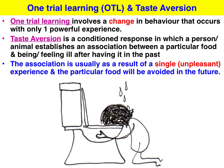OTL — One Trial Learning — involves a change of behaviour that occurs with only one powerful experience. This could be the development of a phobia as a result of a traumatic episode when you're a child. More about this in area study number two: mental health.